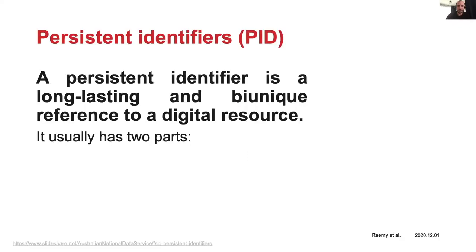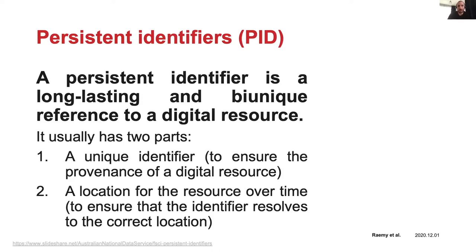As you may be well aware, a PID is a long-lasting and unique reference to a digital resource, and technically consists of a server that is able to forward or resolve identifiers to its corresponding web address. A PID has usually two parts: an identifier that can ensure the provenance of a resource, and a location for the resource over time. Basically, even if the web address changes, normally a given PID should still resolve to its new location.